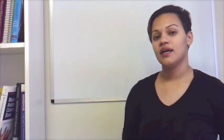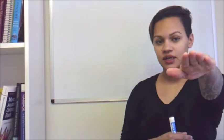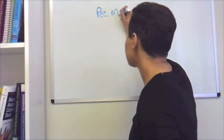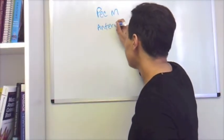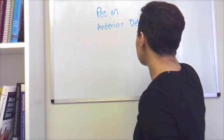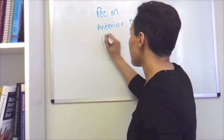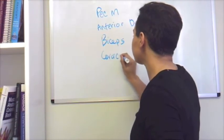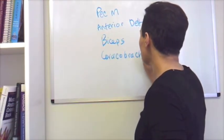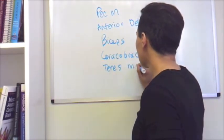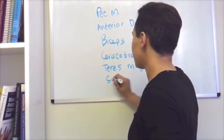So with this client who has pain when they're doing flexion and pain with elevation of the scapula, I'm going to work on their pec major. I'm going to work on their anterior deltoid. I'll also want to work on their biceps, their coracobrachialis, teres major, and subscapularis.